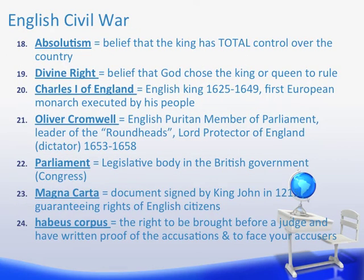On to the English Civil War. At the start of the English Civil War, it is a fight about absolutism and divine right. Absolutism is the belief that the king has total control over the country. Divine right goes along with that, with the belief that God chose the king or queen to rule. Charles I of England is the English king from 1625 to 1649, and he is the first European monarch executed by his people.